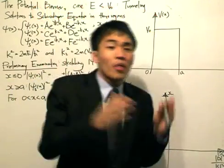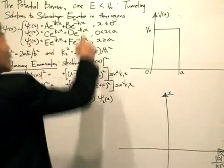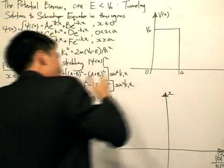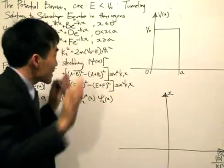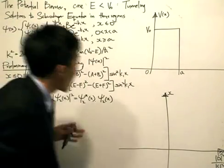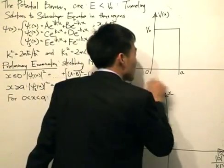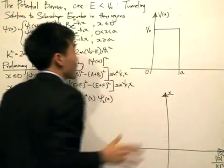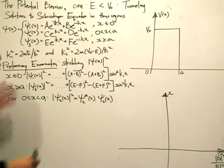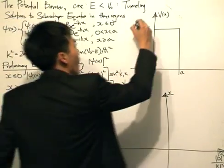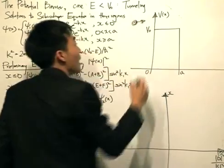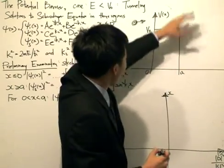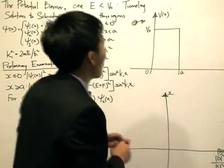We're going to go back to the problem of the potential barrier, but this time we will consider the case where the energy of the particle is less than the potential V0 and see what we get. The potential is sketched here — from x between 0 to a, the potential is V0, and from x less than 0 and x greater than a, the potential is equal to 0. Classically, a particle approaching this region has a certain momentum; as it enters the barrier region, the momentum decreases, and as it exits, the momentum increases.